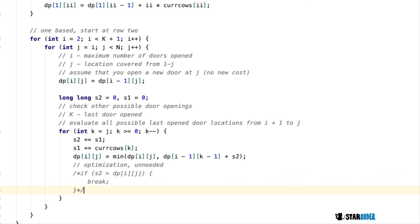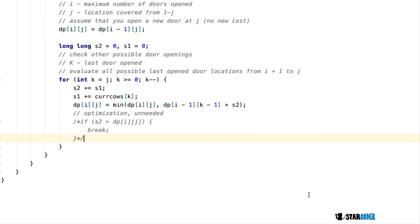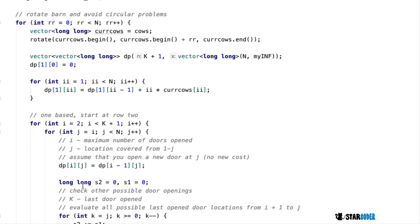At the very end, we make the answer the minimum of itself and DP[K][N-1], output our answer, and that's the end of our program.